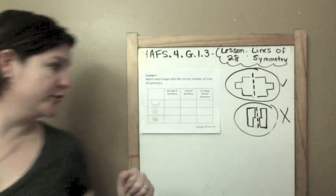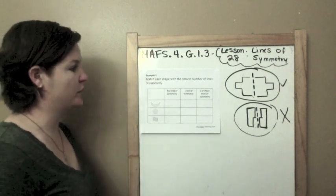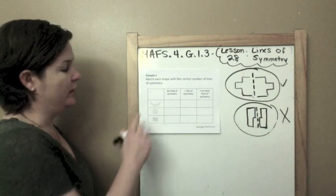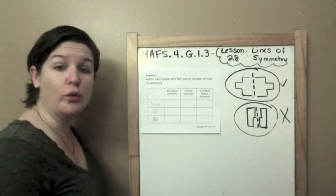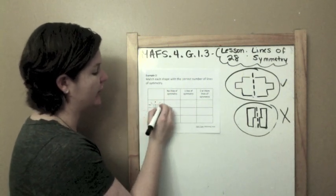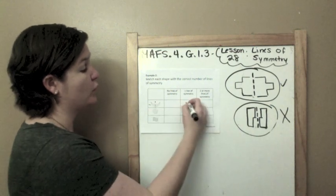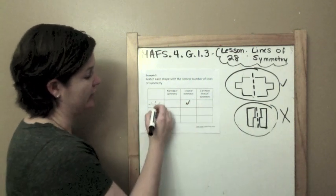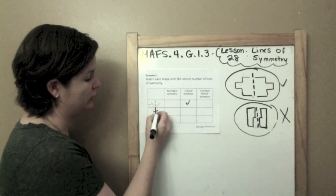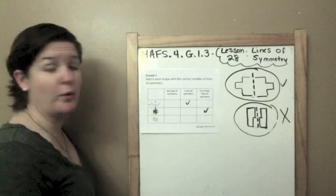Moving on to example two, this is a matching item type of response for a question. Match each shape with the correct number of lines of symmetry. So here we have what looks like a moon, kind of upside down, or a smiley face, and we could cut that going one time down the middle. I could not go across because then I would have horns on one side and the loop on the other. That would not be symmetrical. So there is one line of symmetry. For the pentagon, because I know it's a pentagon because it has five sides, I could go one, I could go two, three, four, five. It has five lines, so I'm going to mark over here at the two or more lines of symmetry.